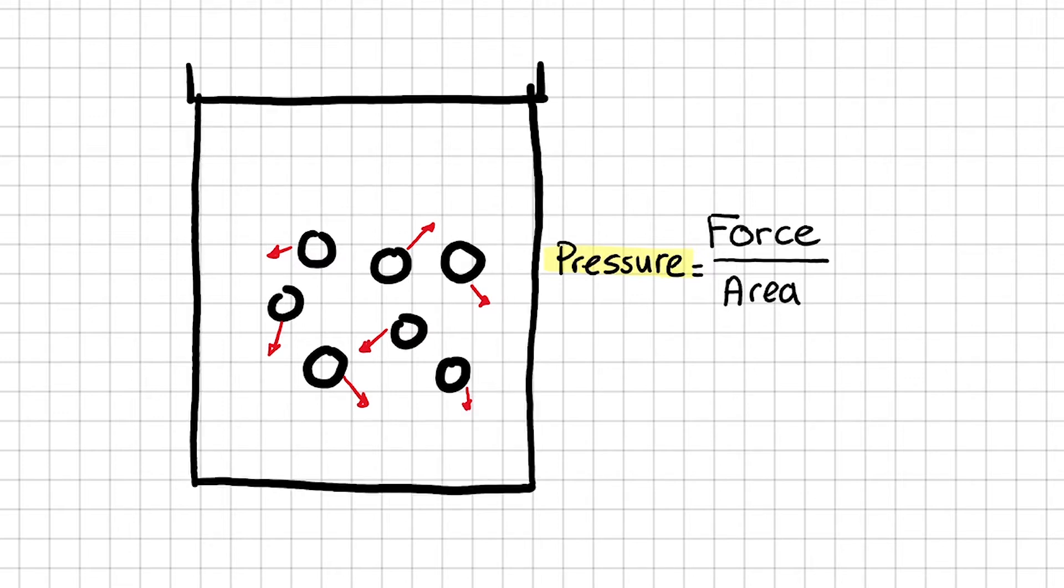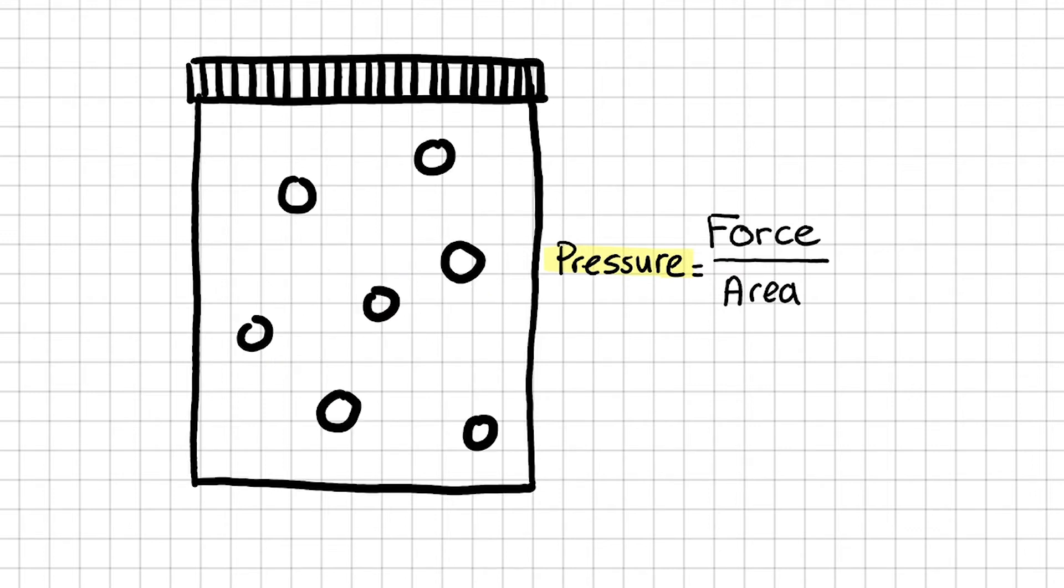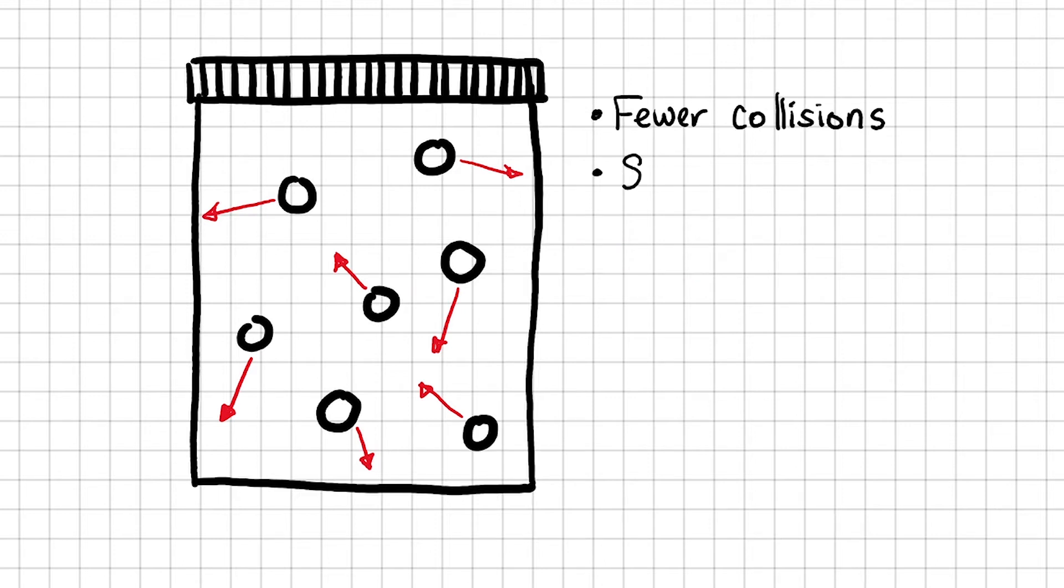What if I now dump the gas into a larger container? Does that make a difference to the pressure? The number of gas particles remain the same as before, but the container is now much more spacious so that the gas particles need to travel a further distance before colliding with the walls. This means that there are fewer collisions in a given time. There will be a smaller total force acting on the walls of the container, and since pressure is force over area, decreasing force also decreases pressure.